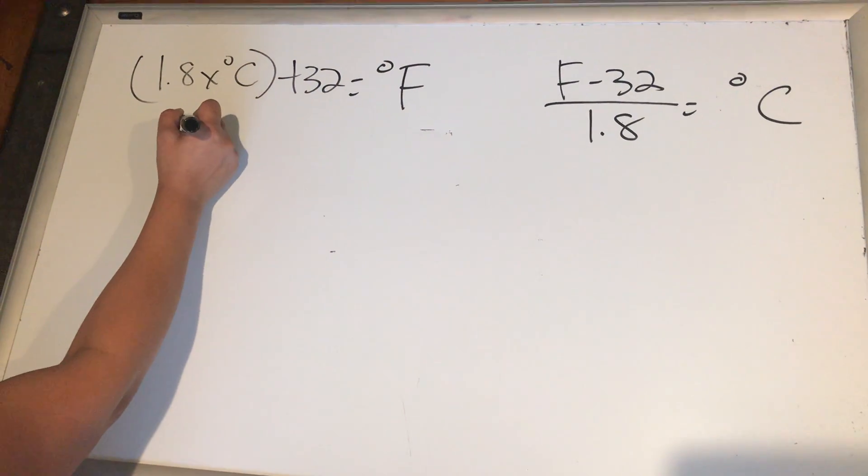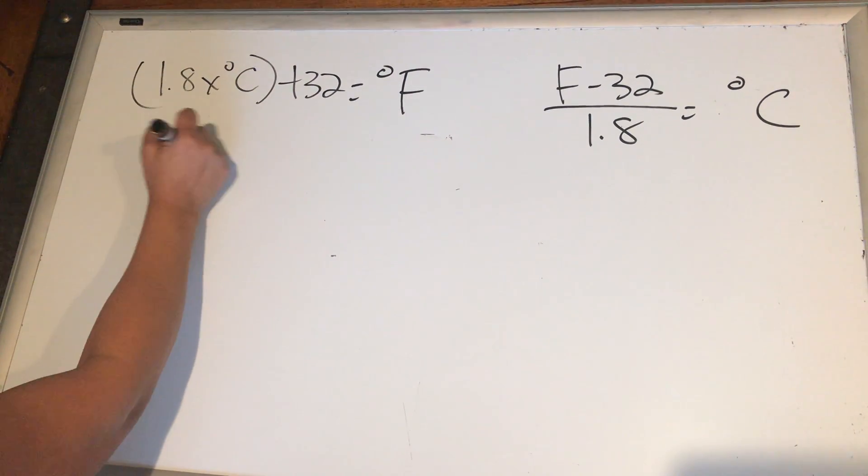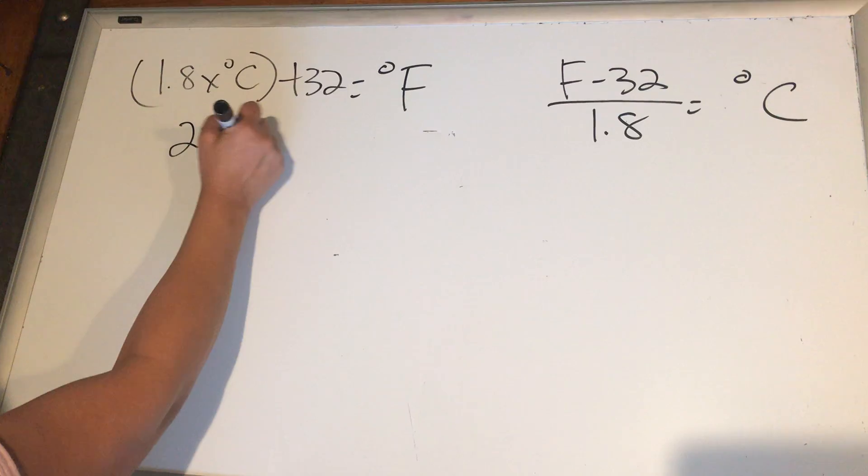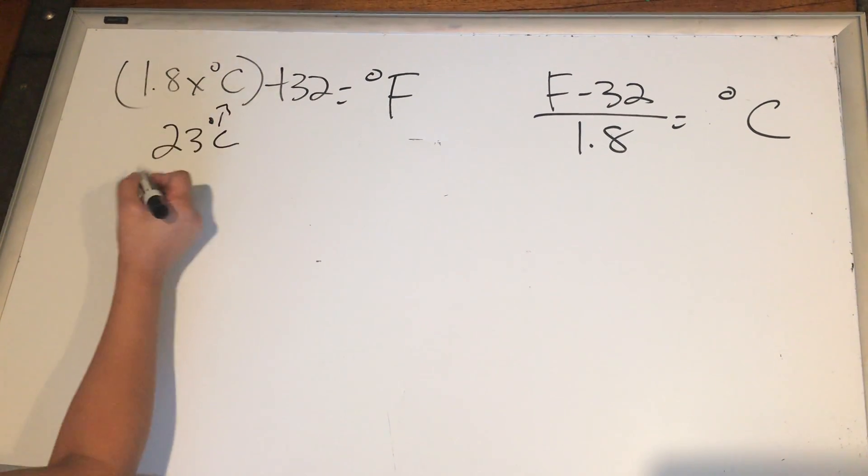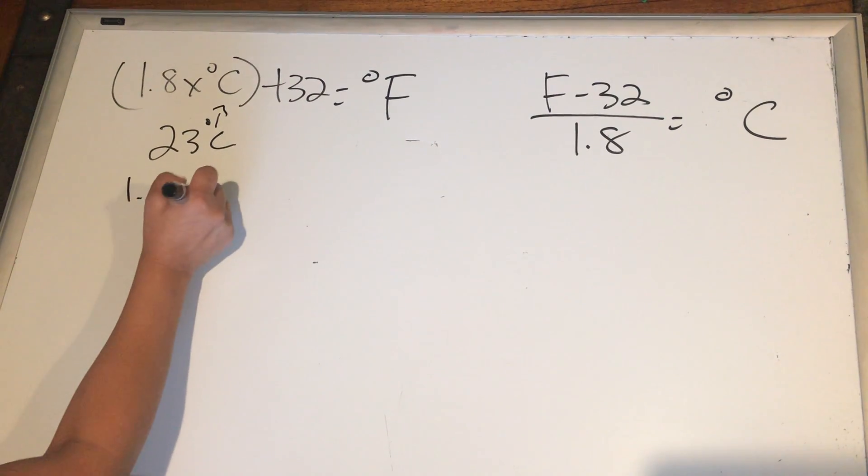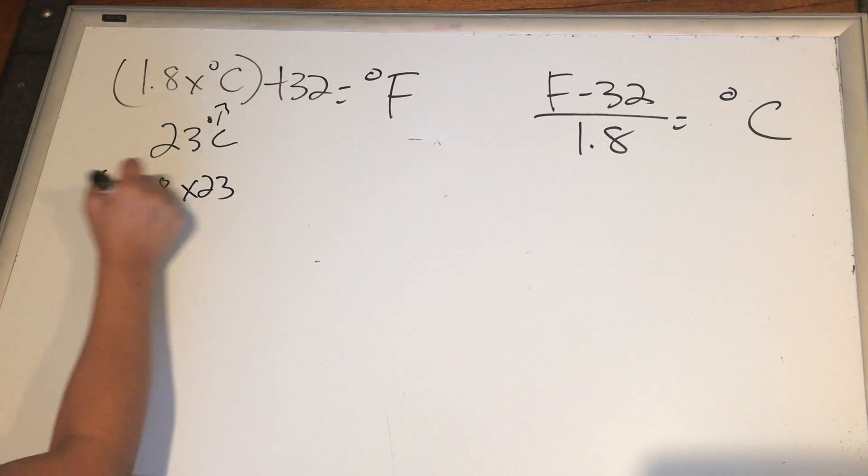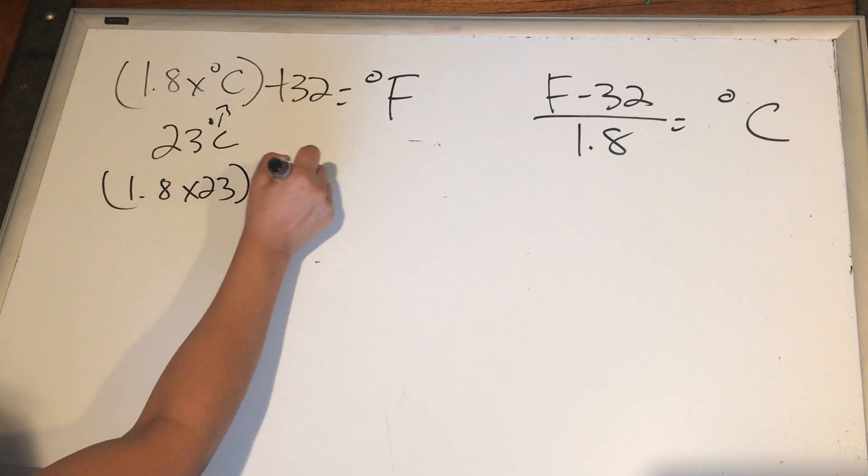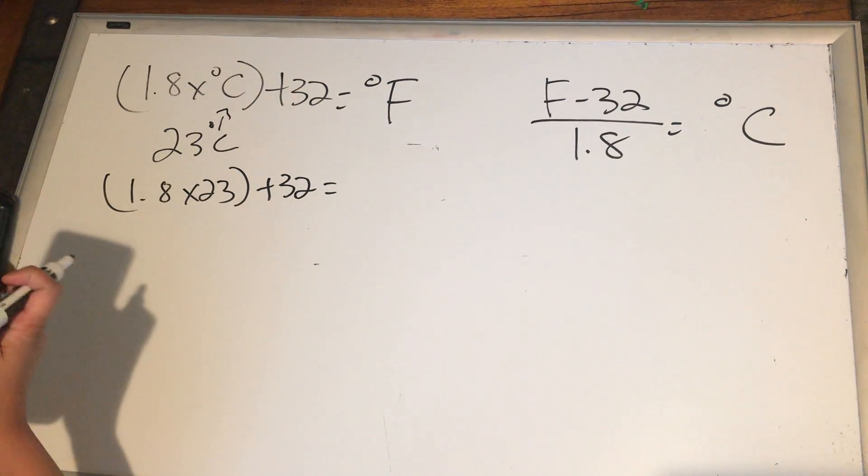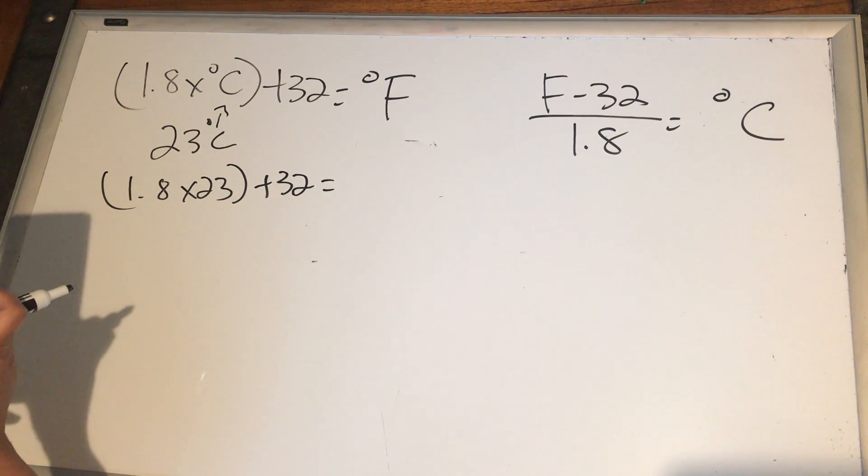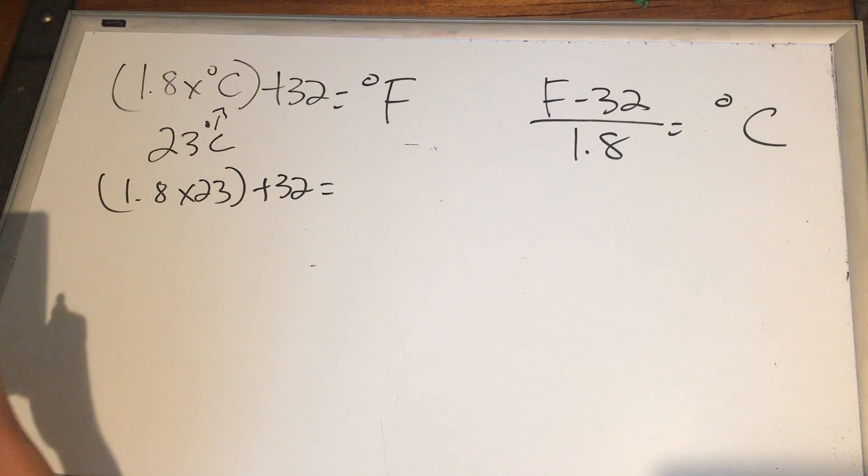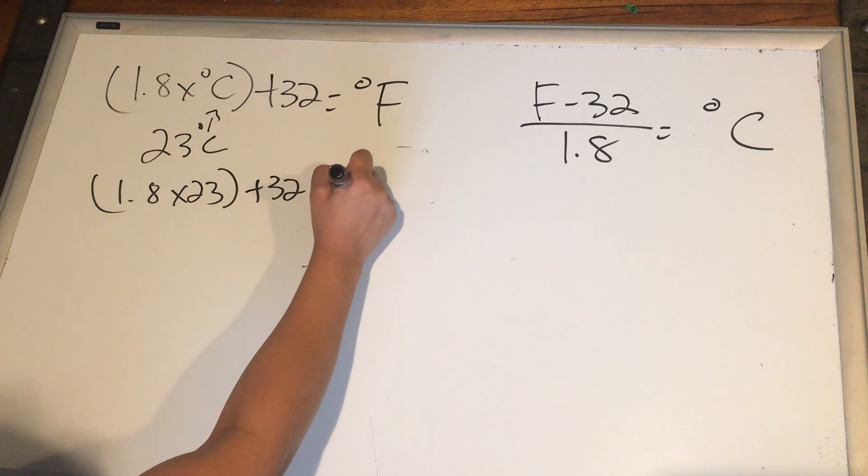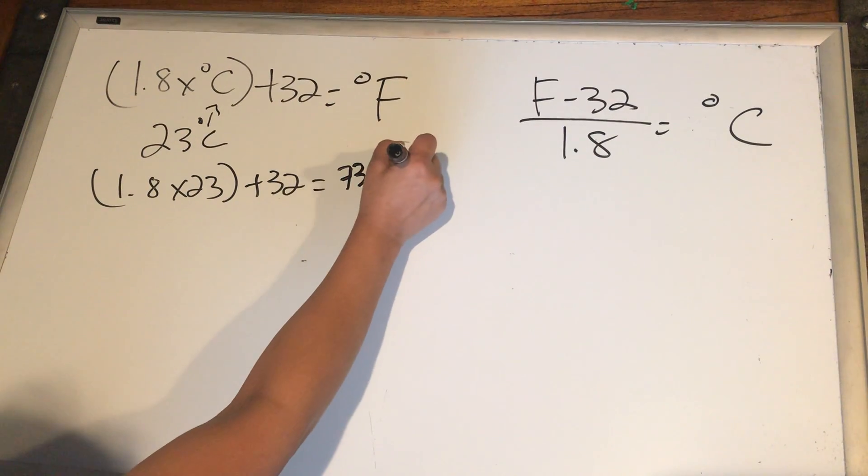So let me give you an example. Let's calculate 23 Celsius. You just have to plug in this number here. So 1.8 times 23 plus 32. 1.8 times 23 plus 32 is 73.4 Fahrenheit.